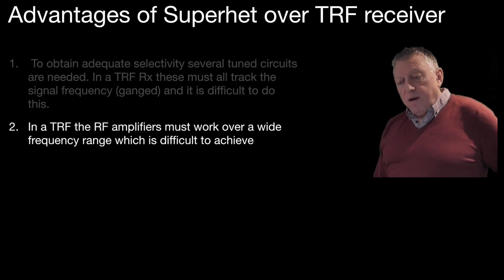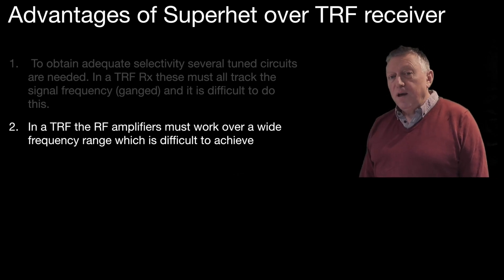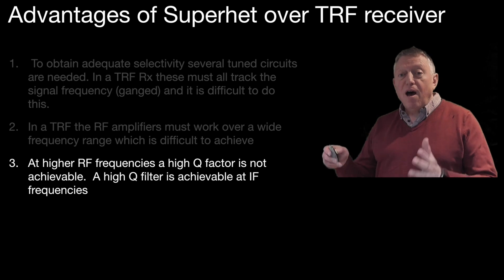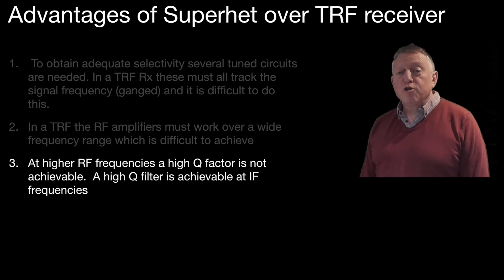In a TRF receiver, the RF amplifiers must work over a wide frequency range. If we had, for example, an HF receiver working from 3 to 30 megahertz, that would be quite difficult to achieve. At the higher end of the band, we would have to achieve very high Q factor filters. Not only would they have to be trackable, but they'd have to have high Q to get the selectivity needed to reject adjacent channels.